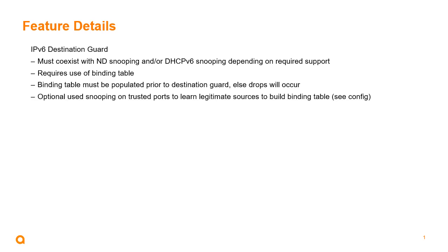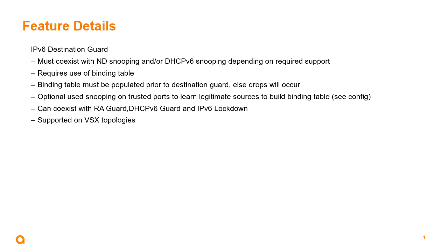Optionally, use snooping on trusted ports to learn legitimate sources to build binding tables. Destination Guard can co-exist with other IPv6 security features such as RA Guard, DHCPv6 Guard, and IPv6 Lockdown. Destination Guard is supported on VSX topologies. Note, it's a VLAN feature and it's not supported on ports.